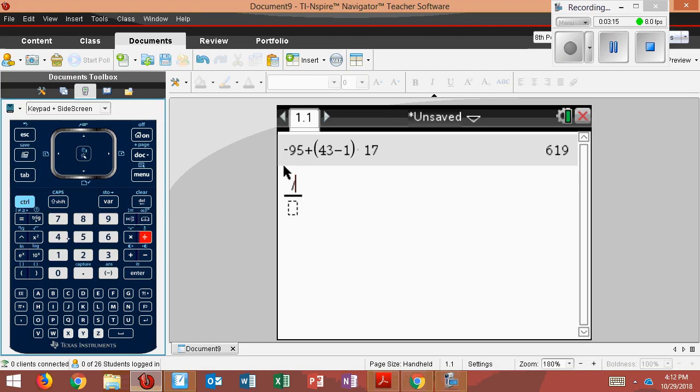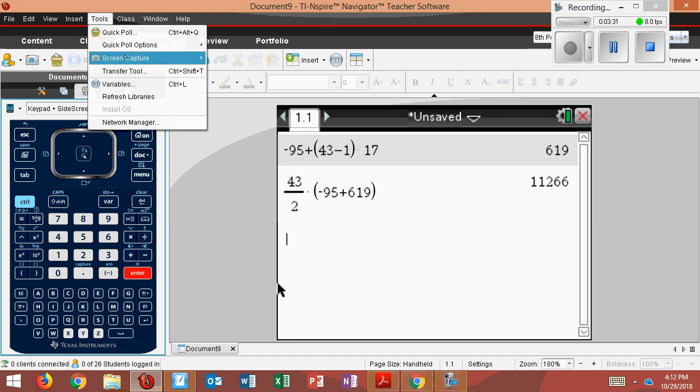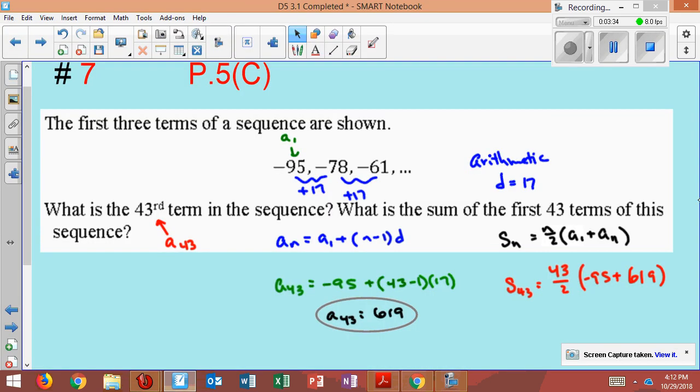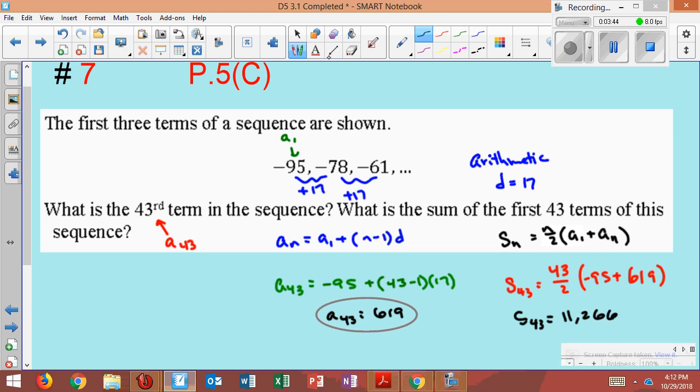we have 43 over 2 times negative 95 plus 619, and I get 11,266. 11,266. And that's our answer.